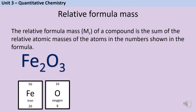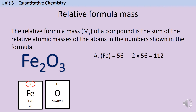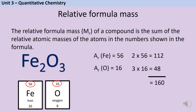If I want to work out the relative formula mass of iron oxide, I first look at the relative atomic masses of the atoms in it. Iron has a relative atomic mass of 56, and there are two iron ions, so I do two times 56, which is 112. Then oxygen has a relative atomic mass of 16, and there are three oxygens, so three lots of 16 is 48. Then all I need to do is add them up to get 160.